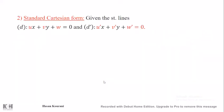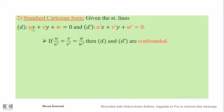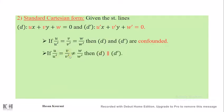Now in standard Cartesian form, given straight line D with equation UX + VY + W = 0 and D prime with equation U'X + V'Y + W' = 0, where the parameters U, V, W, U', V', W' are known: the first case is if U/U' = V/V' = W/W', meaning the coefficients of D and D prime are proportional — then D and D prime are coincident. In the second case, if U/U' = V/V' but this does not equal W/W', then D and D prime are parallel.